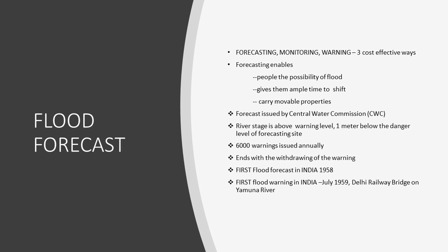This forecast is issued by the Central Water Commission (CWC). When the river stage is above the warning level — one meter below the danger level at a forecasting site — authorities will issue a warning sign that there is a chance of flood or overflow. For example, above the Periyar river at the 10-meter danger level mark, at 9 meters authorities will issue the warning. Annually in India, around 6,000 warnings are issued, ending with the withdrawing of the warning. The first flood forecast in India was done in 1958, and the first flood warning was issued in July 1959 about the Delhi railway bridge on the Yamuna river.